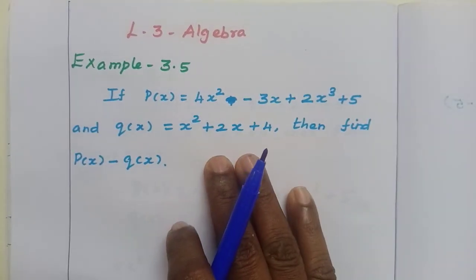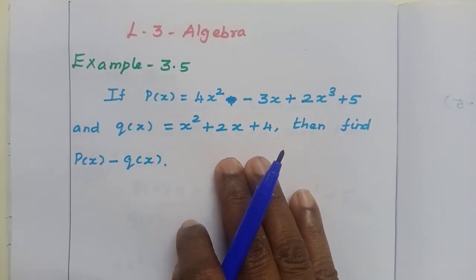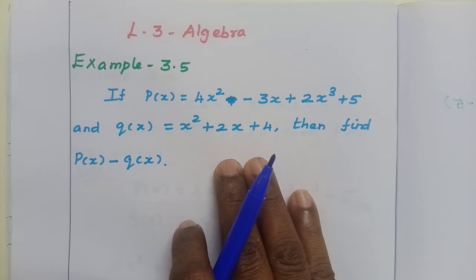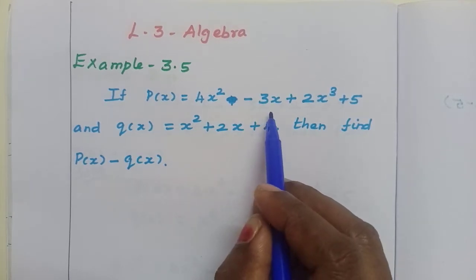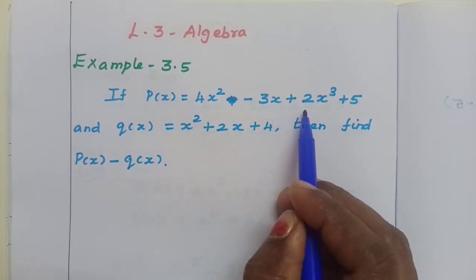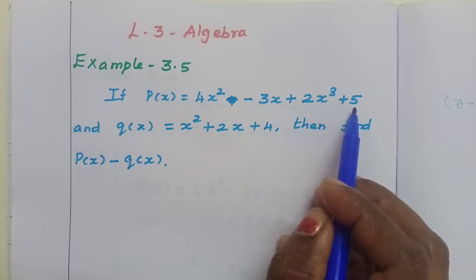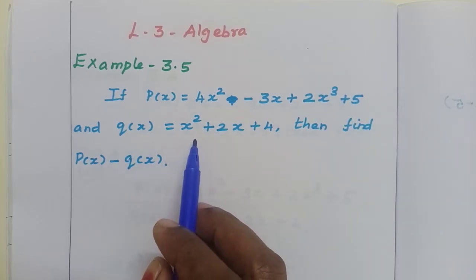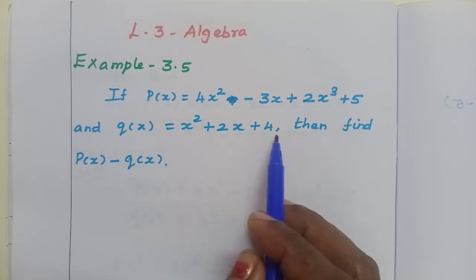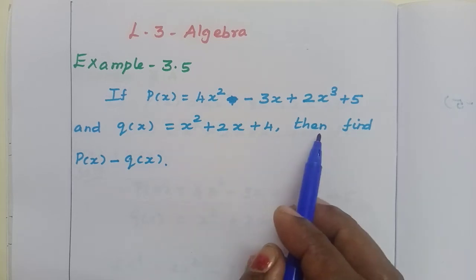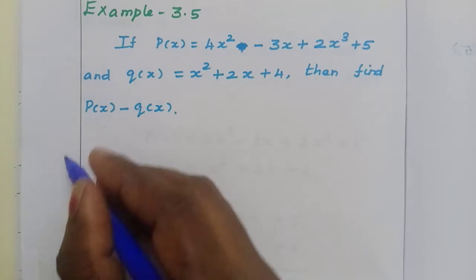Lesson 3, Algebra. Example 3.5. If p of x equals 4x squared minus 3x plus 2x cubed plus 5, and q of x equals x squared plus 2x plus 4, then find p of x minus q of x.